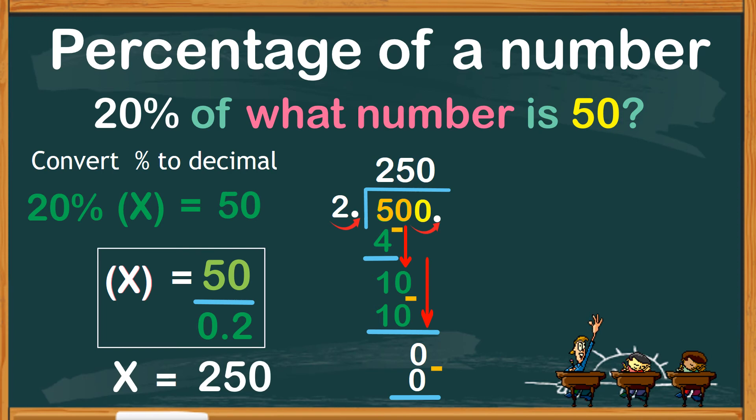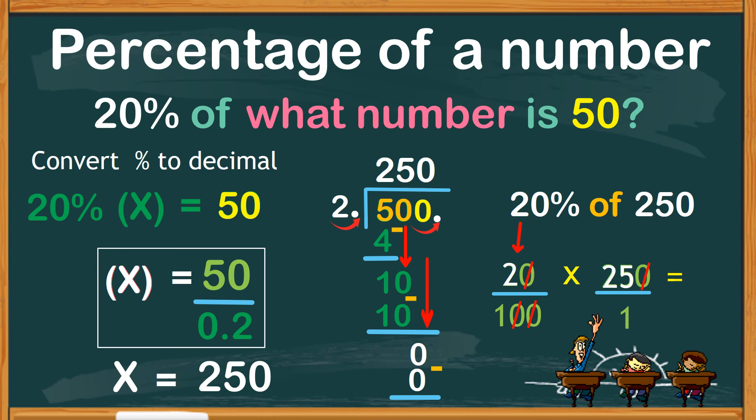Let's check if our answer is correct. Let's see if 20% of 250 equals 50. 20% is 20 over 100 times 250 with 1 as the denominator. Cancel the two zeros in the fraction above. Do the same with the two zeros below. We now have 2 times 25, which is 50. Therefore, our answer is correct.